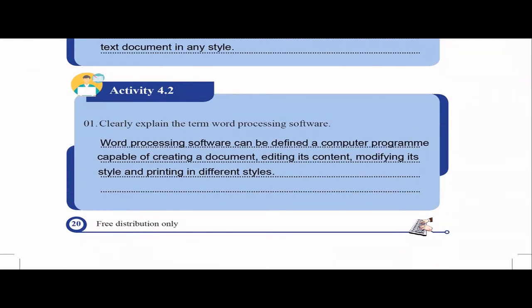Clearly explain the term word processing software. Software means the computer program which helps you to do word processing. So it's a computer program capable of creating a document, editing it, modifying its styles and formats, and if you want you can save it or print it. All these things are supported in word processing software.